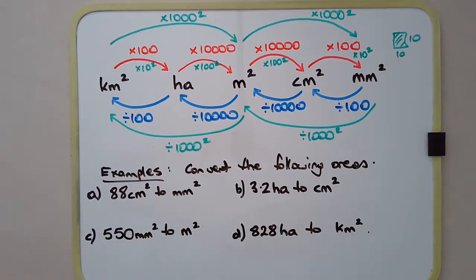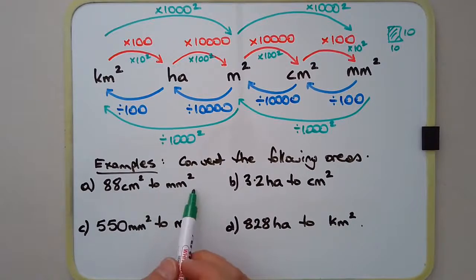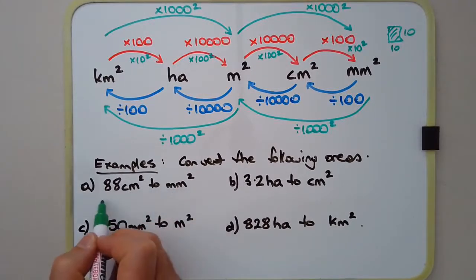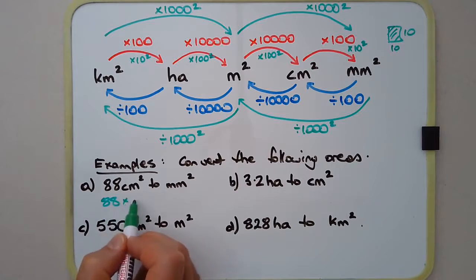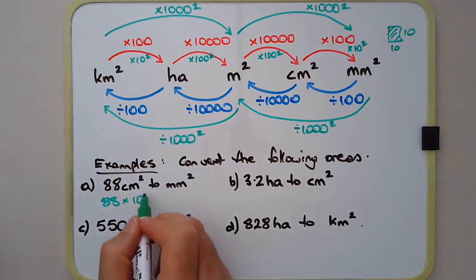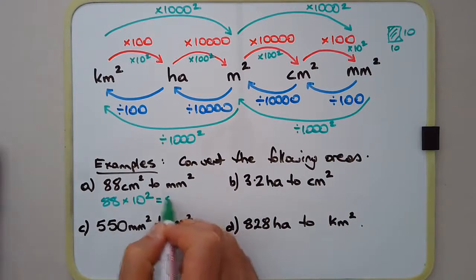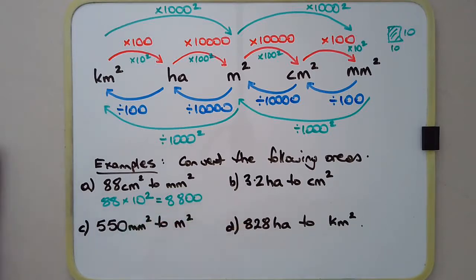Now let's look at some examples. First: convert 88 square centimetres to square millimetres. We're going from a larger unit to a smaller unit, so it's a multiplication. For length, you'd multiply centimetres by 10 to get millimetres. But because we're dealing with area, we multiply by 10 squared, which is 100. So 88 times 100 equals 8,800. Make sure you include the correct unit of measure: 8,800 square millimetres.